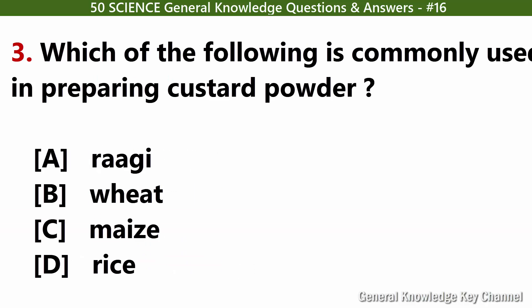Which of the following is commonly used in preparing custard powder? Answer C: Maize.